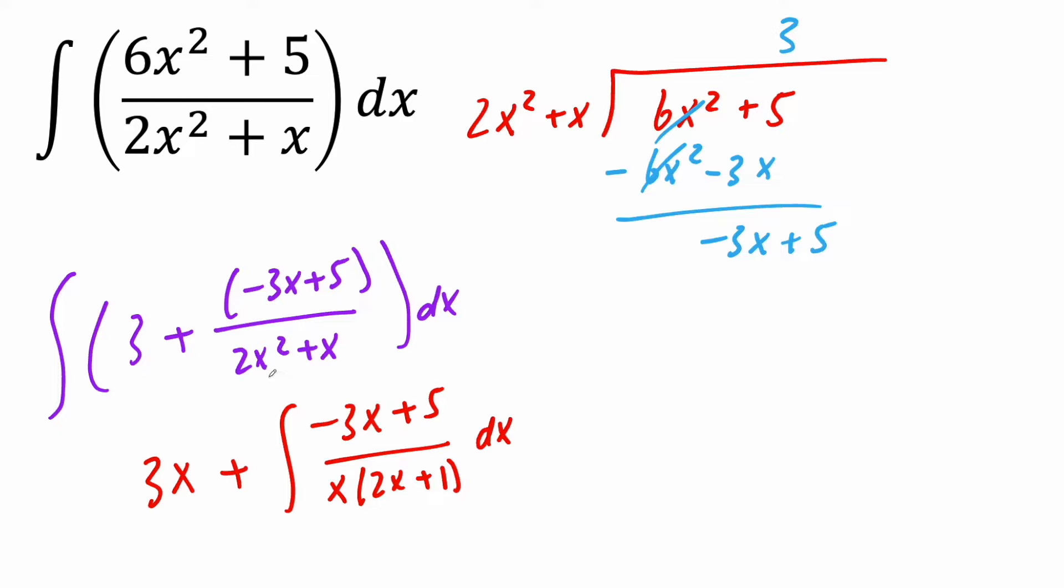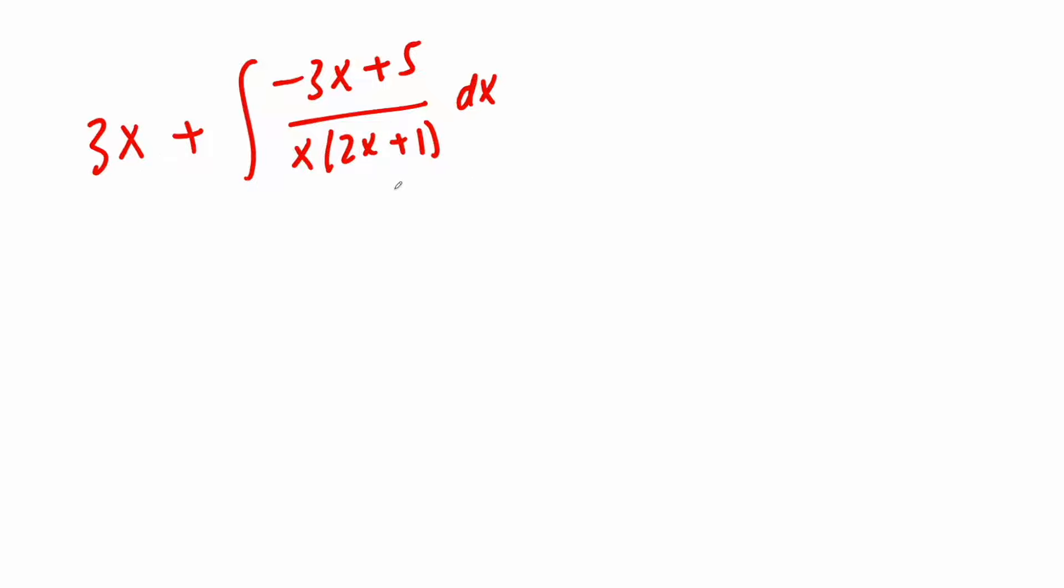Now because the power of our denominator, x squared, is bigger than the power for our numerator, we're going to have to go ahead and use partial fractions. And so I'm going to need more room. So at this point, I'm just going to focus on this piece right here. I'm even going to ignore this integral symbol.